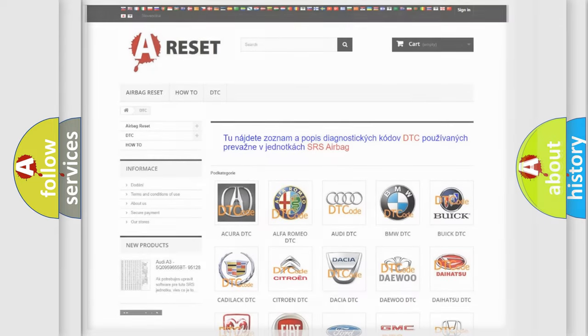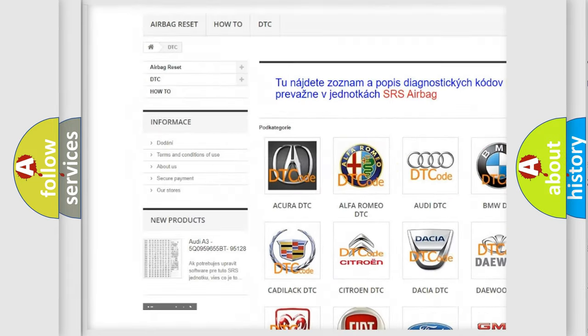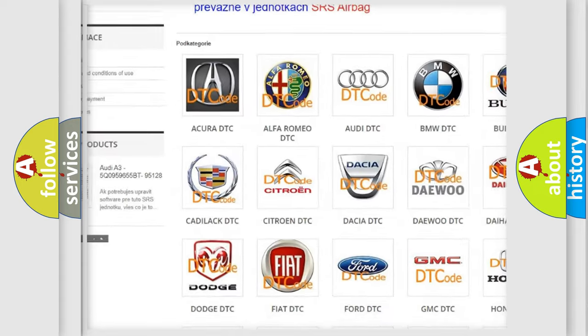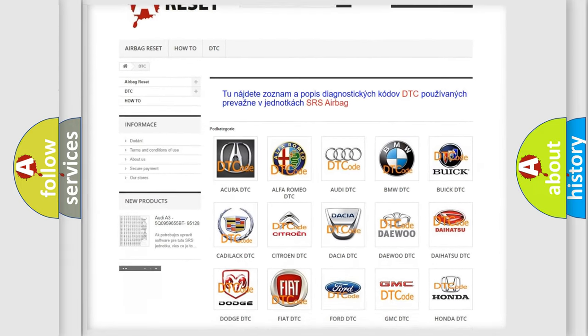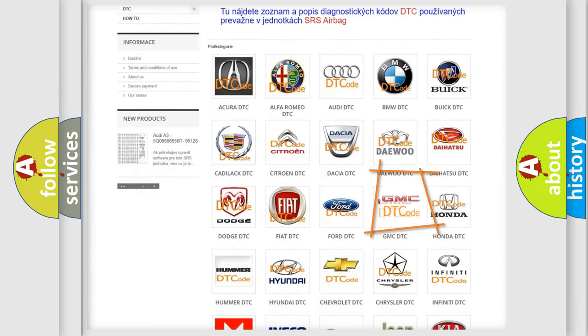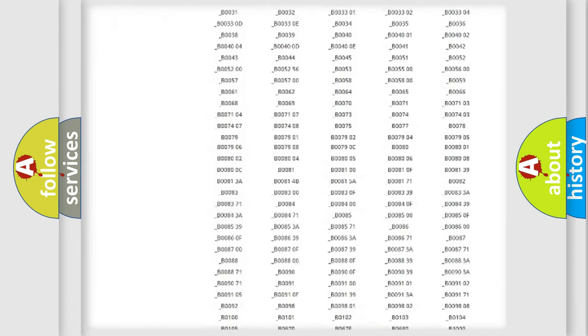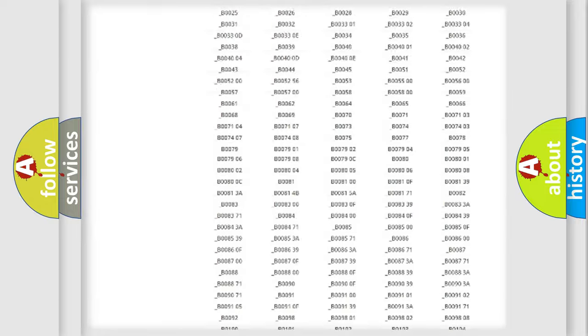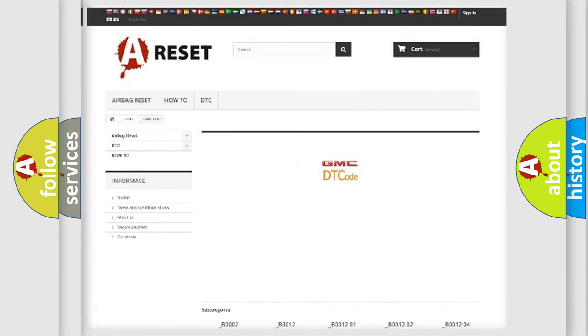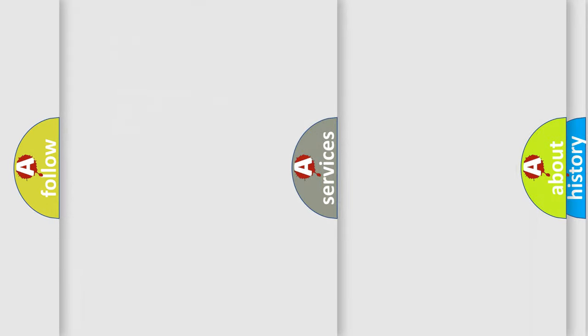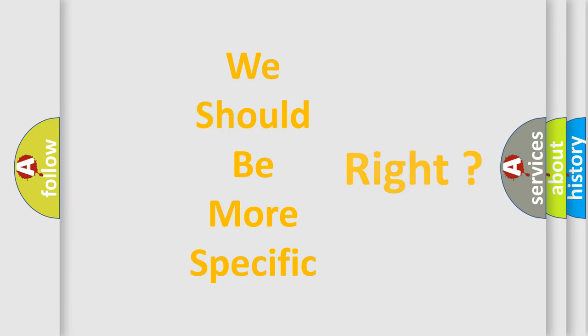Our website airbagreset.sk produces useful videos for you. You don't have to go through the OBD2 protocol to know how to troubleshoot any car breakdown. You'll find all diagnostic codes that can be diagnosed in GMC vehicles, plus many other useful things. The following demonstration will help you look into the world of software for car control units.